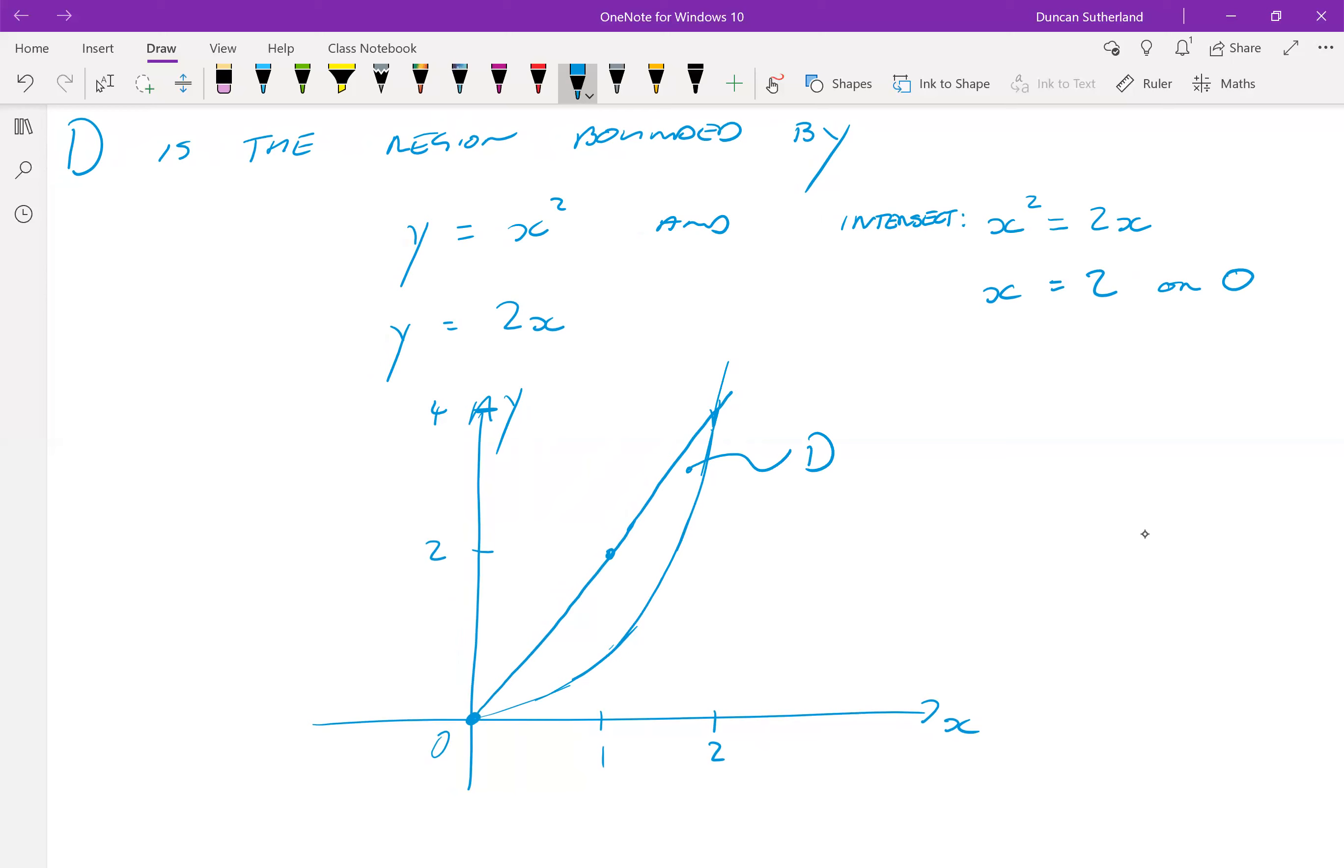We can now proceed to write down the integral, treating the x integral first, right? So we start at the line y equals 2x or x equals y on 2. And we integrate up to the line y equals x squared or x equals square root y. Right, and it's positive square root, you can see.